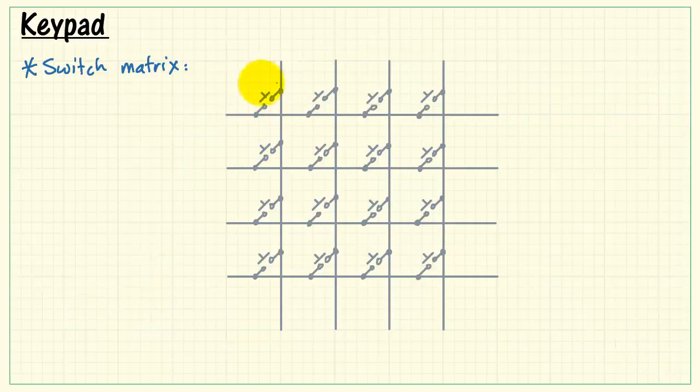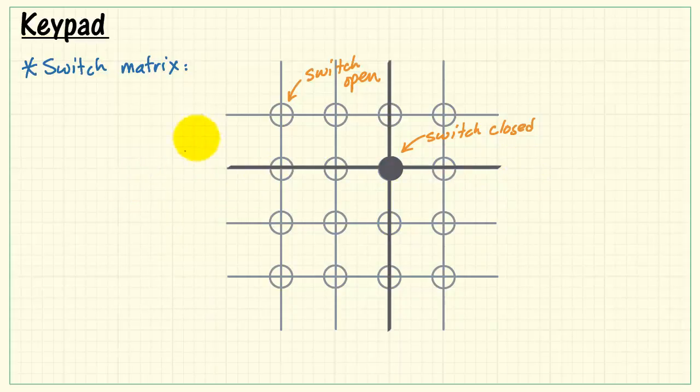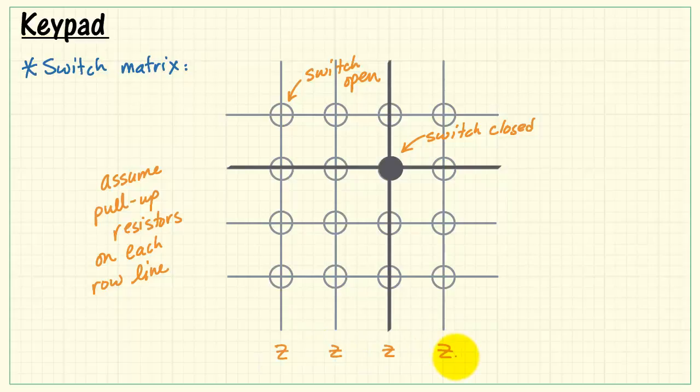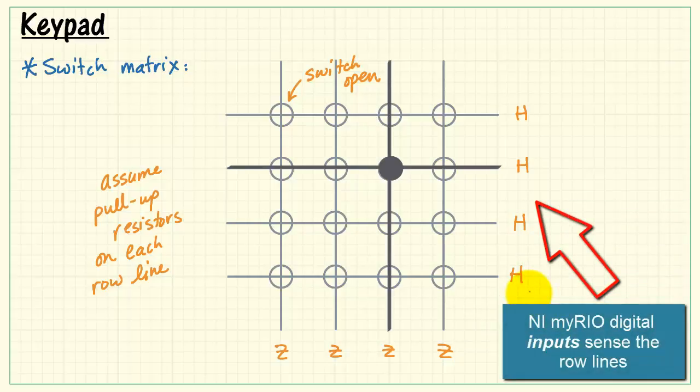All right, now I'd like to introduce some streamlined notation to help us better understand the scanning process. The open circle indicates an open switch, while the closed circle indicates that the switch is closed. When the switch is closed, I will indicate the connection between the column lines and row lines like this. Now I'm going to assume for the rest of this discussion that we're using pull-up resistors on each line, and I'll use capital Zs to indicate the high impedance state, and H and L to indicate either high or low voltage levels. The four column lines are driven by MyRio digital outputs, while the four row lines are sensed by MyRio digital inputs.